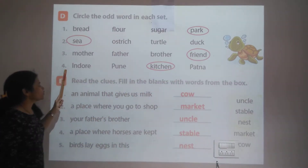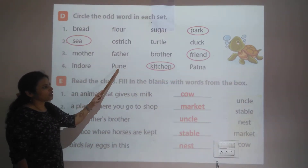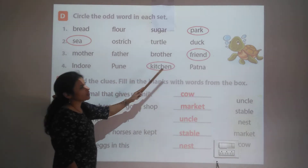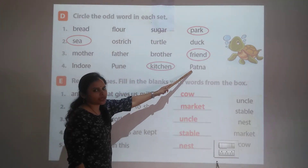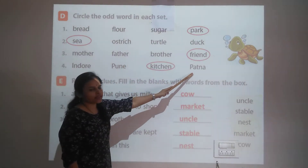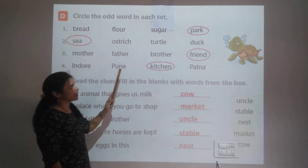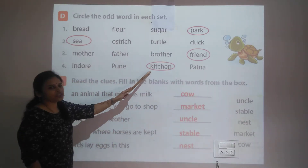The fourth set: indoor, Pune, kitchen, and Patna. Pune and Patna are city names. But kitchen is a room — it is the odd one out. We have to circle kitchen.